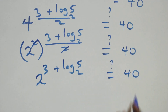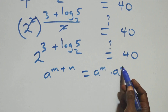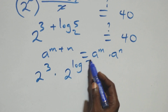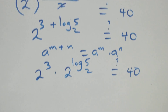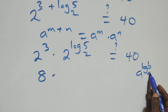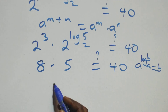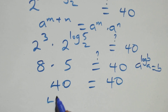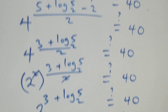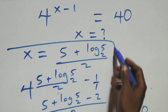Using the identity a raised to power log_a(b) equals b, we have 2 raised to power log₂5 equals 5. So 2³ times 5 equals 8 times 5 equals 40, which equals the right hand side. Therefore, x equals (5 + log₂5) over 2 satisfies this given problem.